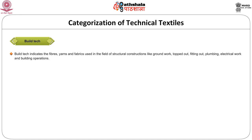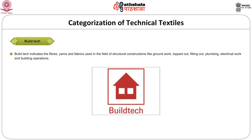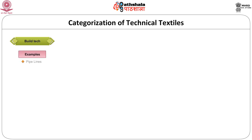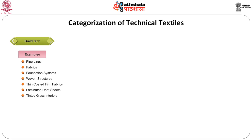The next category is build-tech. This includes fibers, yarns, fabrics in the field of structural construction work, which covers groundwork, topping-out, fitting-out, plumbing, electrical work, and building operation. This is represented by a house symbol with two windows on either side. Examples of build-tech are jute fabrics used for curing, yarns used for connecting pipelines, fabrics used for concrete reinforcement, noise prevention fabrics, and coated tin fabrics used for sun protection. Here we can see two pictures of architectural membrane and a swing.